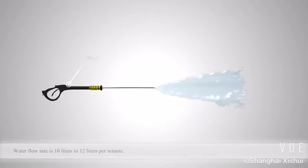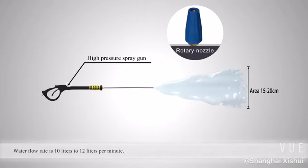Water gun flow rate is 10 to 12 liters per minute. High-pressure cleaning system only requires seven hours.